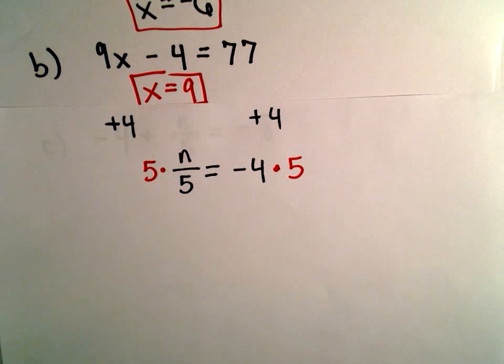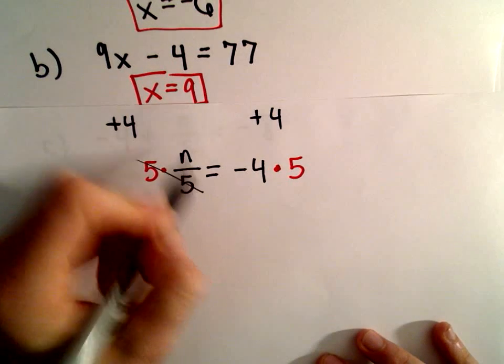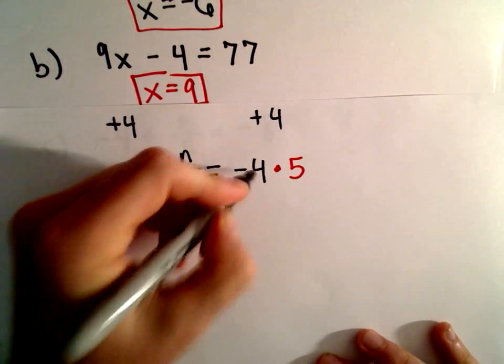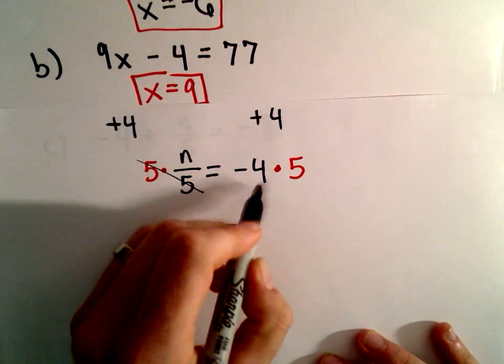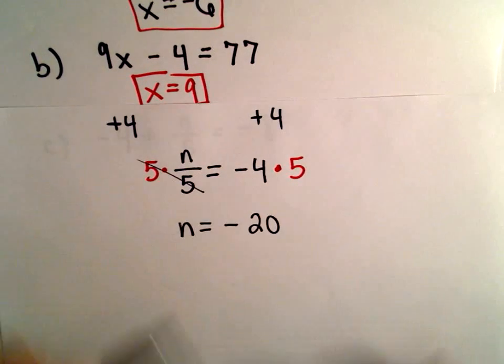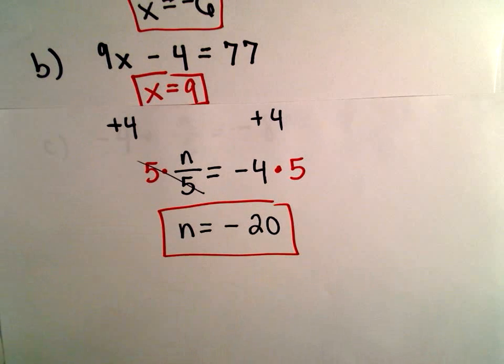So on the left side, 5 divided by 5 is just 1, n. A negative and a positive is a negative. 4 times 5 will be 20. And we have our solution for Part C. n will equal negative 20.